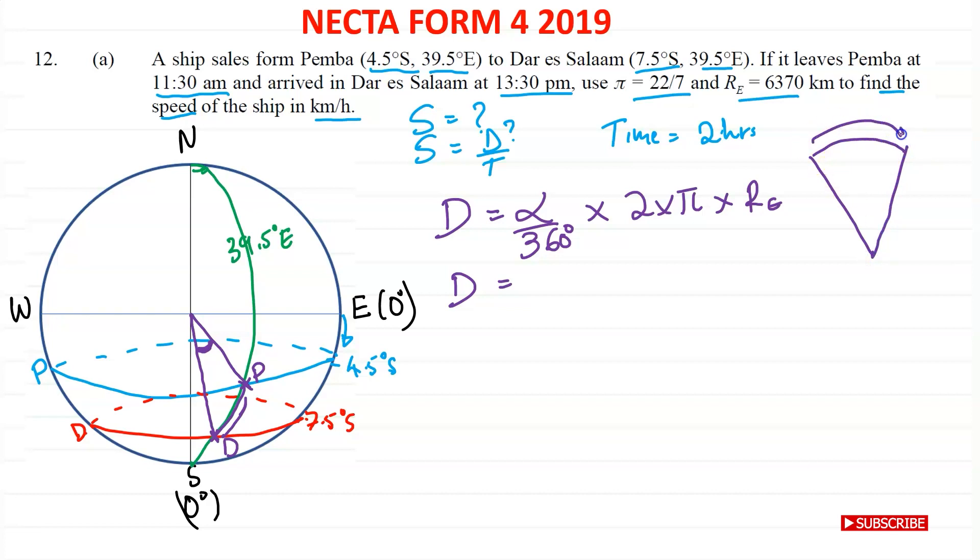This is the distance that we need. This is Pemba. This is Dar es Salaam. So the position of Pemba is 4.5 degrees south. This one is 7.5 degrees south. It's in the same hemisphere. So we're going to find the difference between the two, which is 3 degrees.